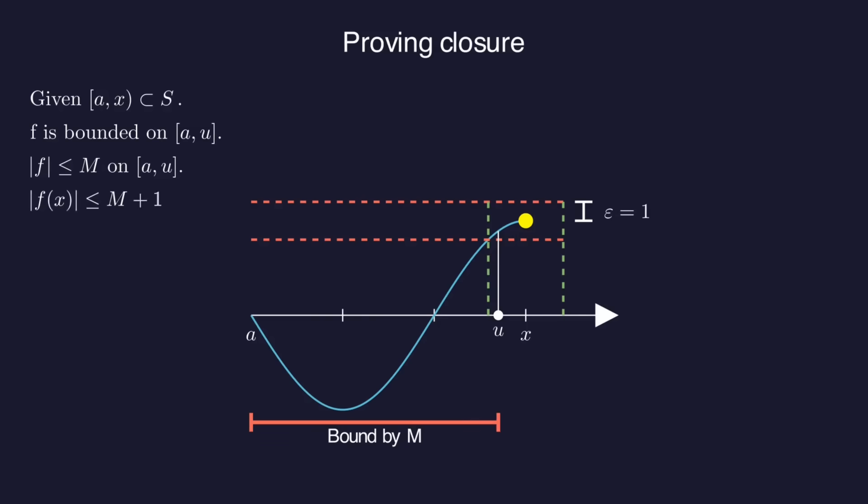Now we know that F of X is within one unit of F of U, so we can say that F of X can't be bigger than M plus 1 in magnitude. And now we can reason that in the little interval around X, F can't exceed big M plus 2.